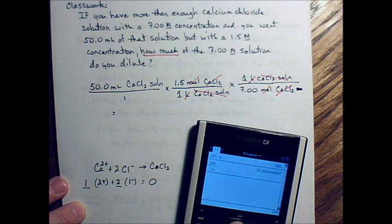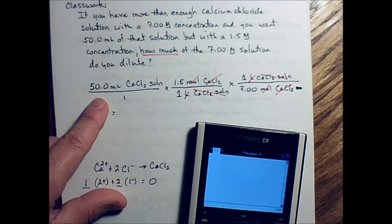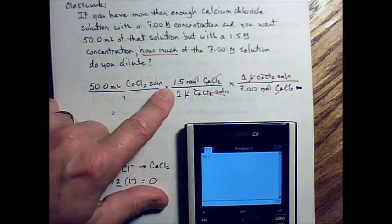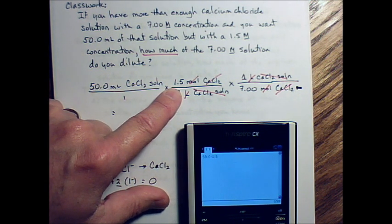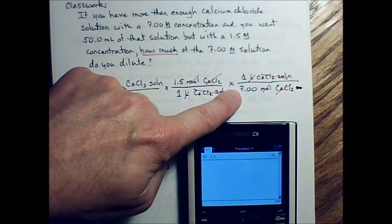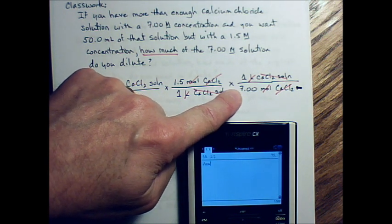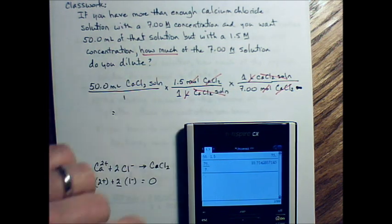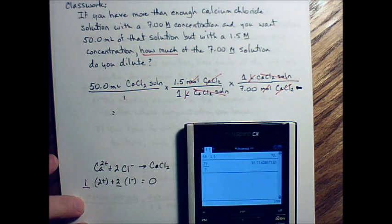Let's do the math. So 50 times 1.5, enter, and then divide it by 7. And I get this large number here.